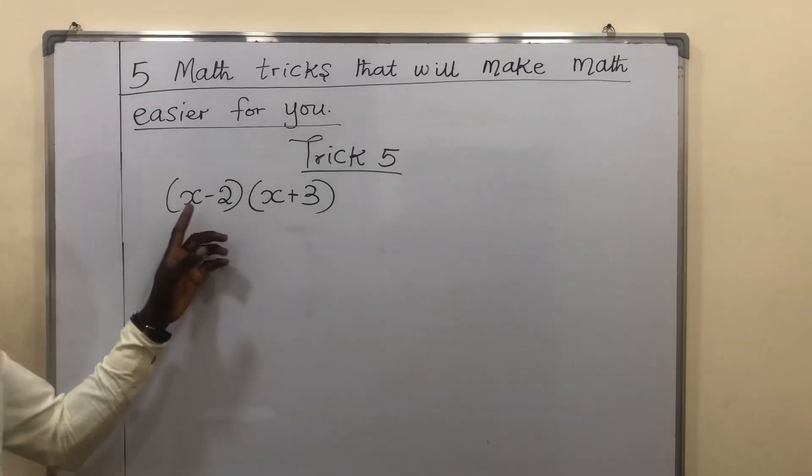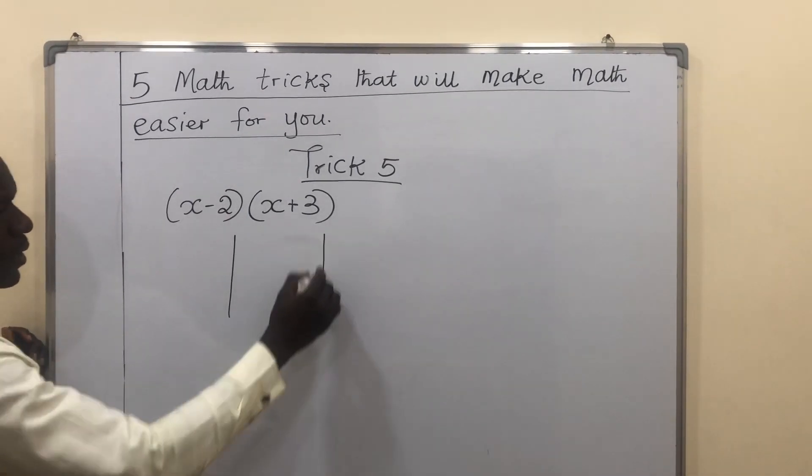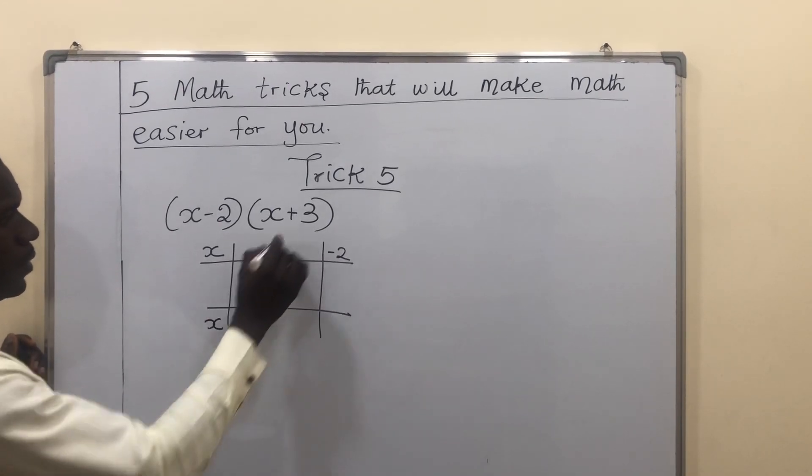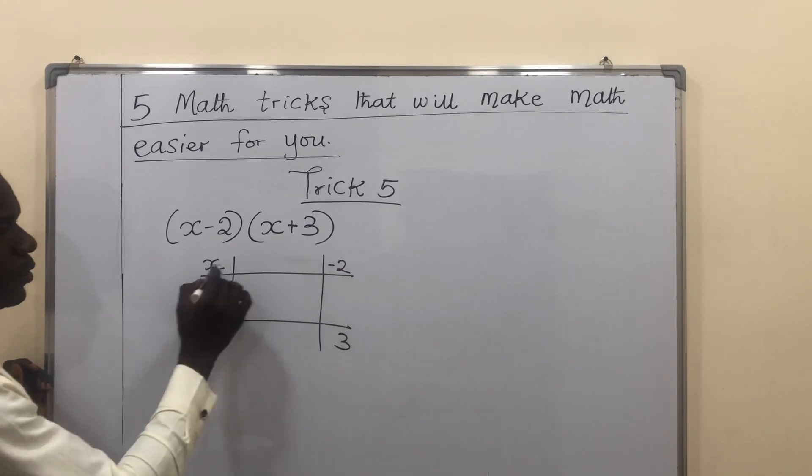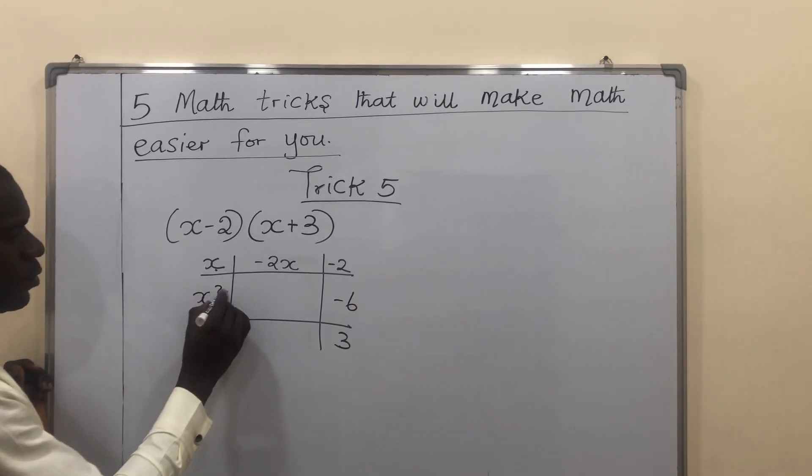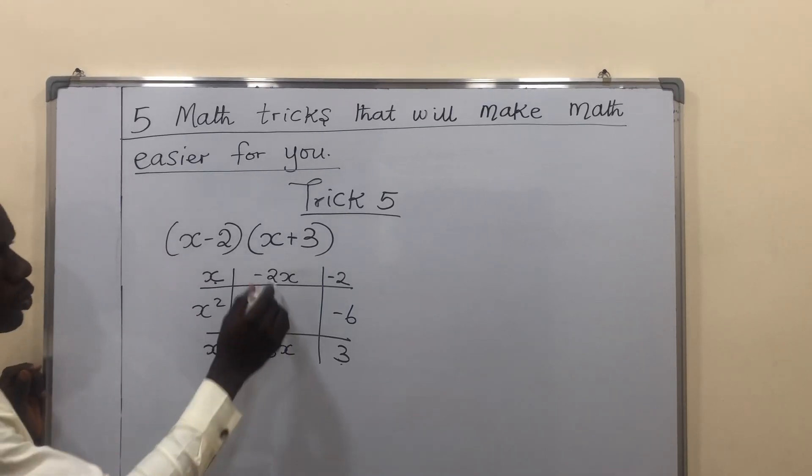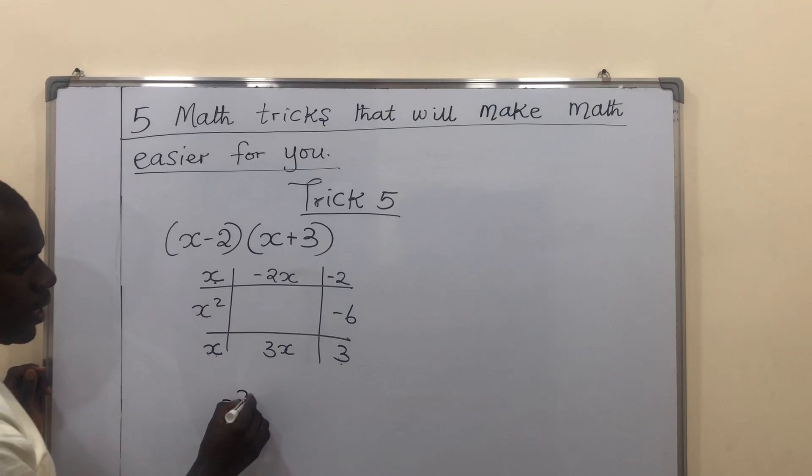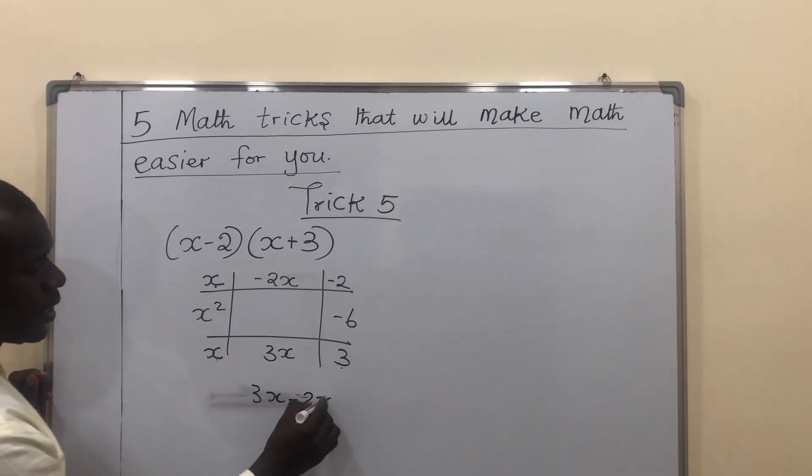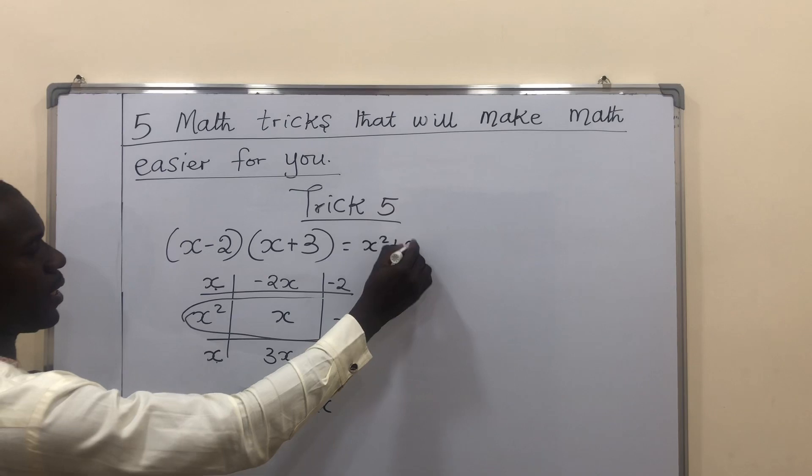Let's look at a different example. What if we have a negative symbol like what we have here? Let's draw our 2 vertical lines, our 2 horizontal lines. The x, bring it here. Minus 2, bring it here. The x, bring it here. Plus 3, which is just 3, bring it here. Minus 2 times x will give me minus 2x. 3 times minus 2 will give me minus 6. x times x will give me x squared. 3 times x will give me 3x. Multiply around like in the previous example. Now, what you have here, add them together. Minus 2x, this is plus 3x. It can also be rewritten as 3x. You are adding this minus 2x. I'll be left with x here. So, what I have here is my answer. My answer is x squared plus x minus 6.